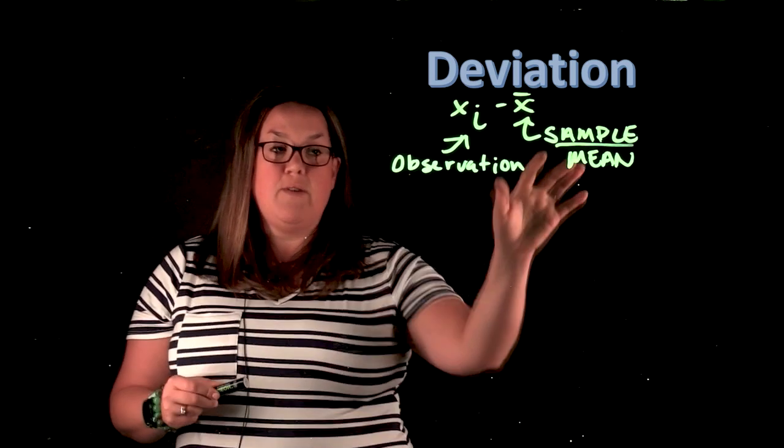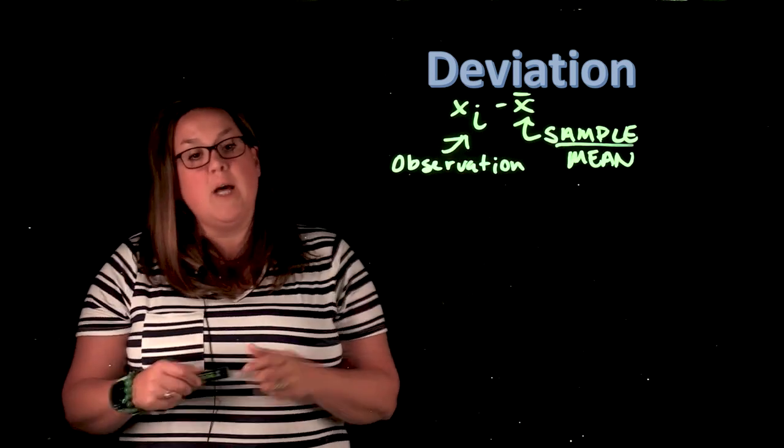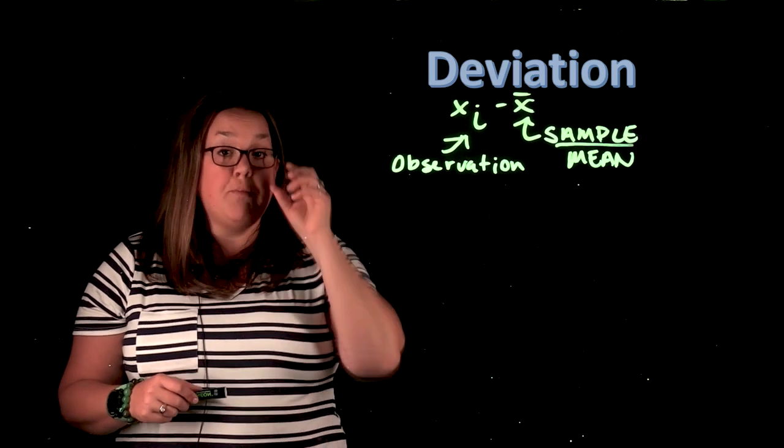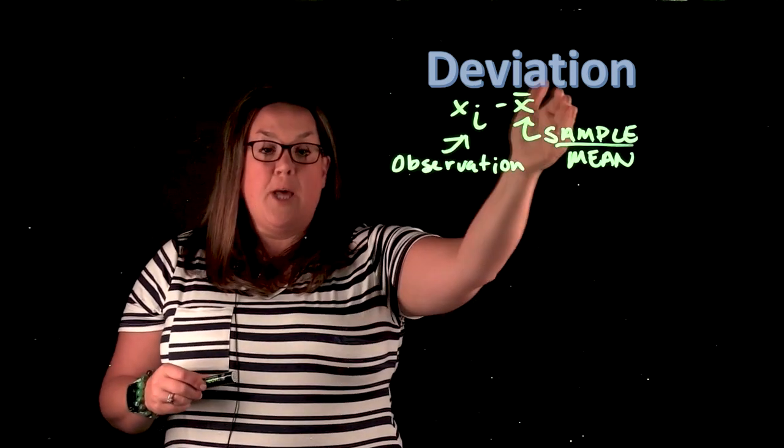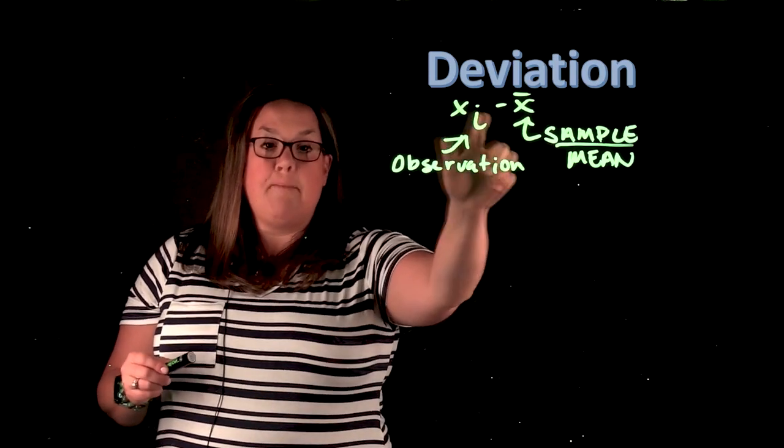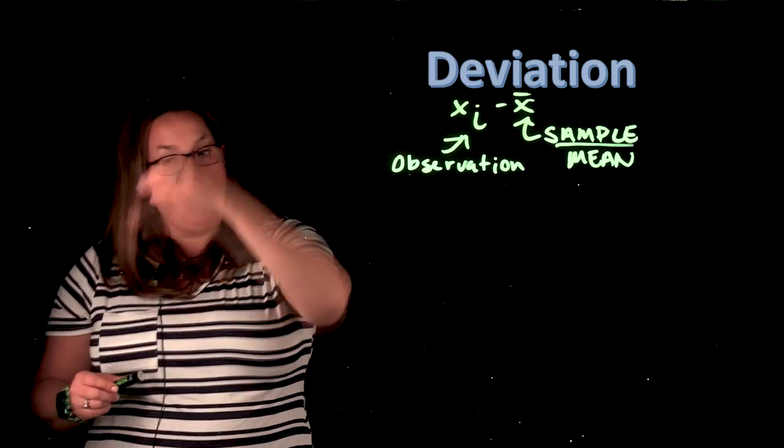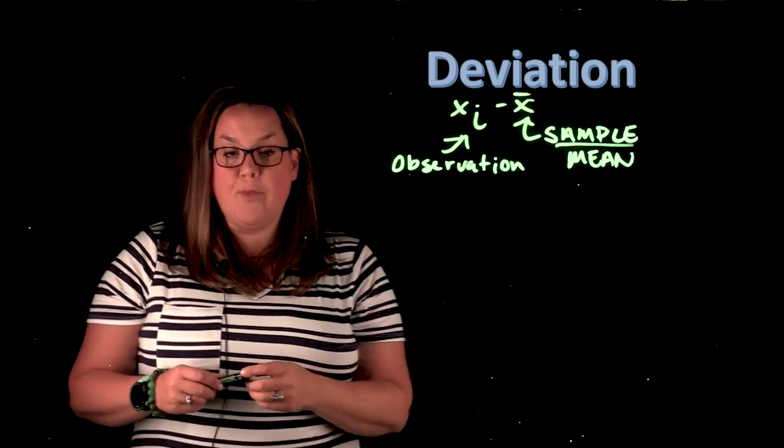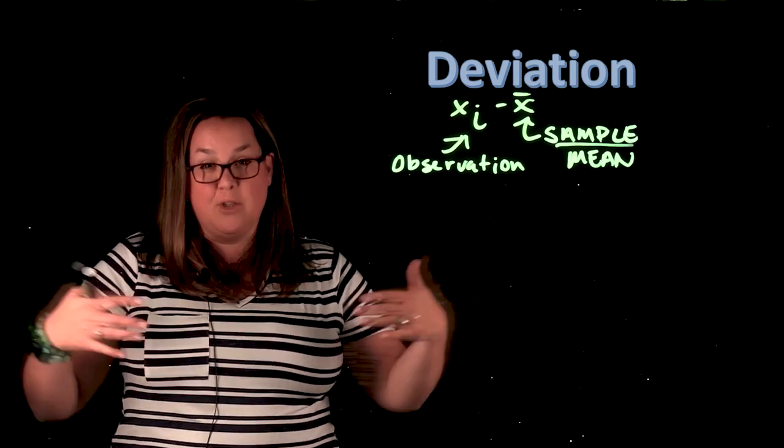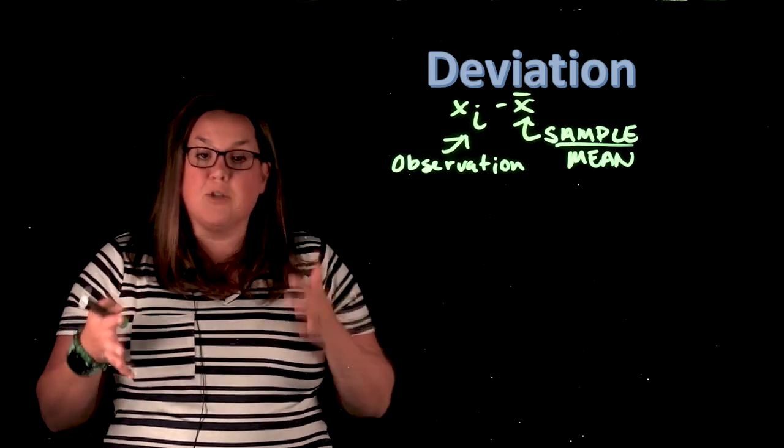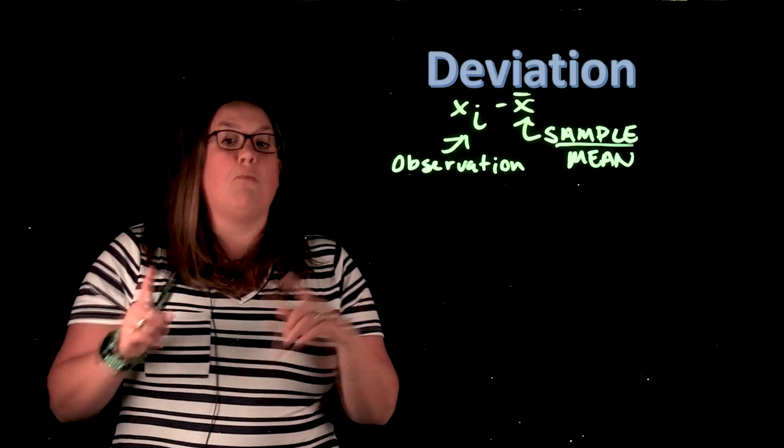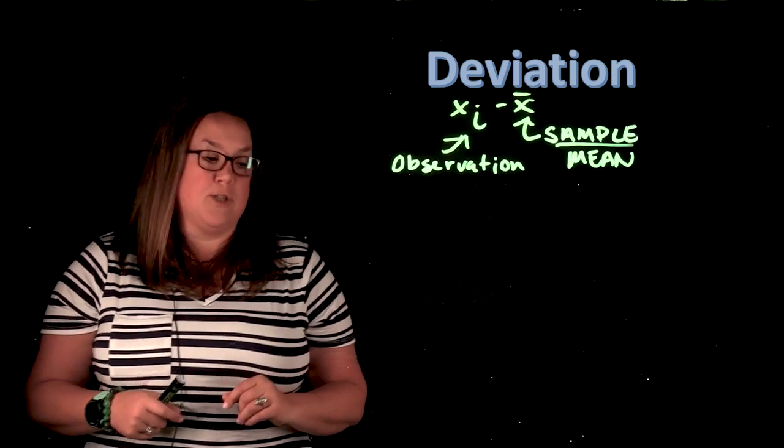Now when you calculate deviation, what you may notice because of this formula is it's measuring the distance that values fall from the mean, but it also would be measuring the direction. So if the deviation came out to be positive, that means the observation is above the mean. And if the deviation came out to be negative, that means the observation is below the mean. So just by the very nature of what the mean does and how it's calculated, we expect to see both negative and positive values because the mean is trying to be in the center of all of the observations in our data set. So we'll have some negative, which indicates that those observations are below the mean, and we'll have some positive, which indicates that those observations are above the mean.